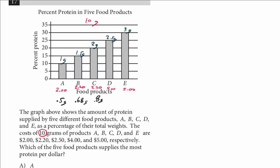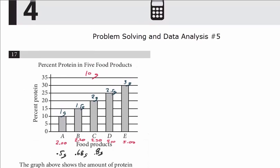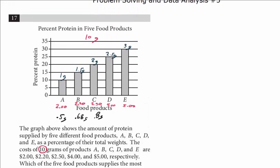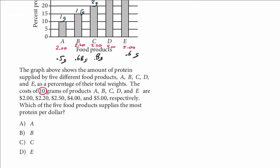You might want to look at the choices because we have 5, but if you look at the choices just to save time, we don't even need to compute D. That's not a choice, but that would be 2.5 over 4. The last one is E, and E is 3 over 5. We know 3 over 5 is 0.6. So, the one that provides the most protein per dollar is C.